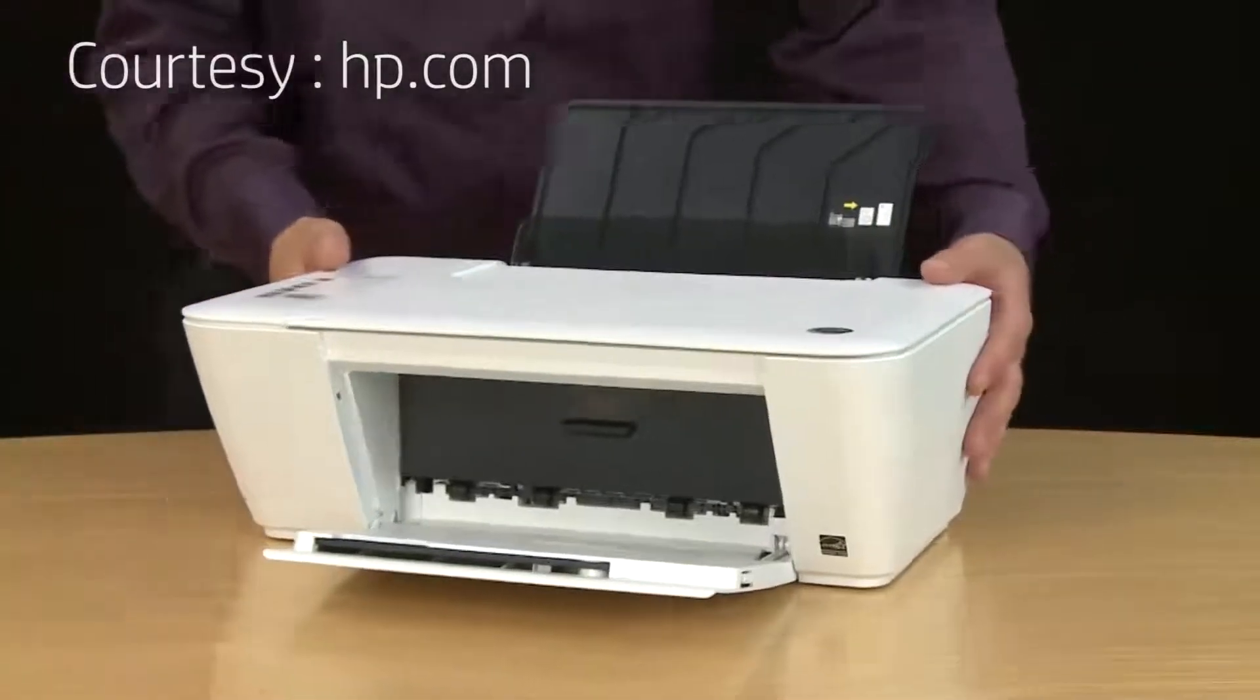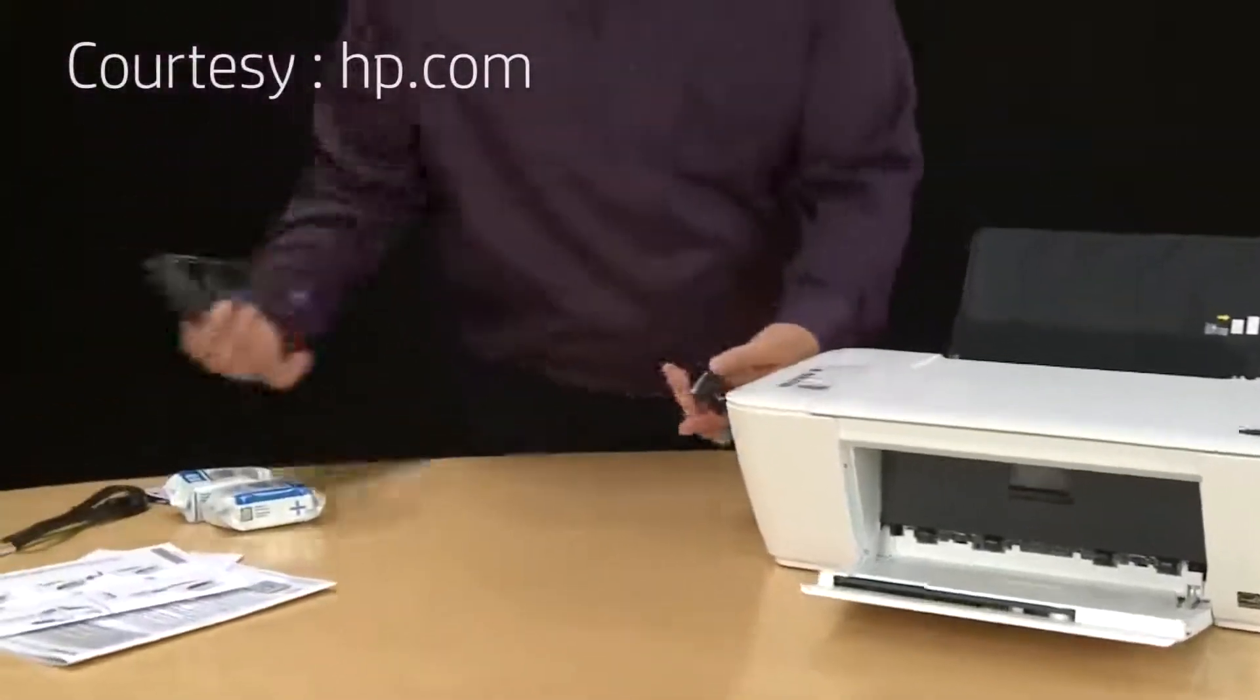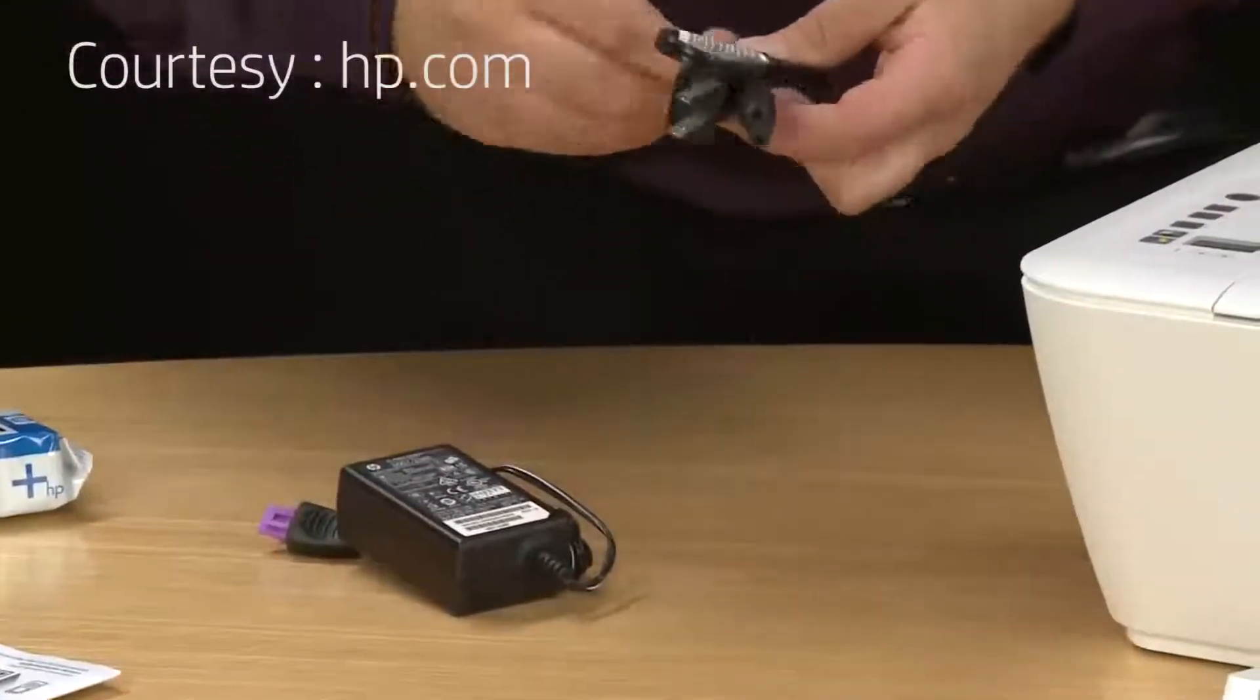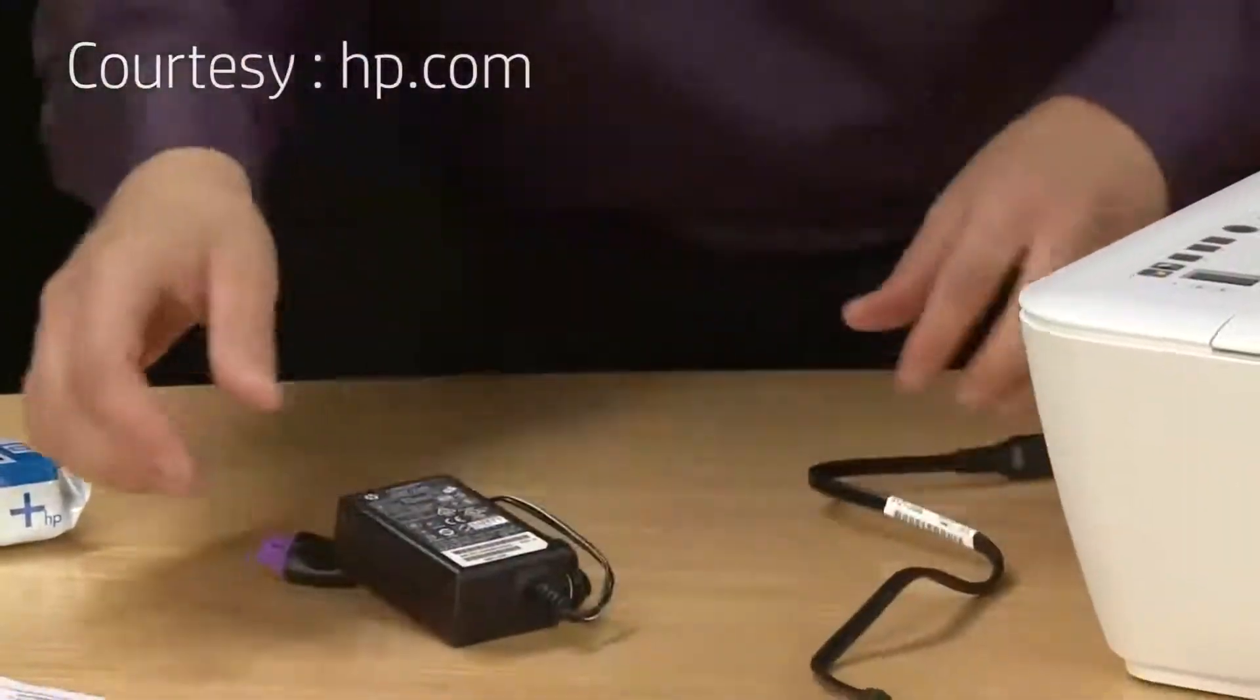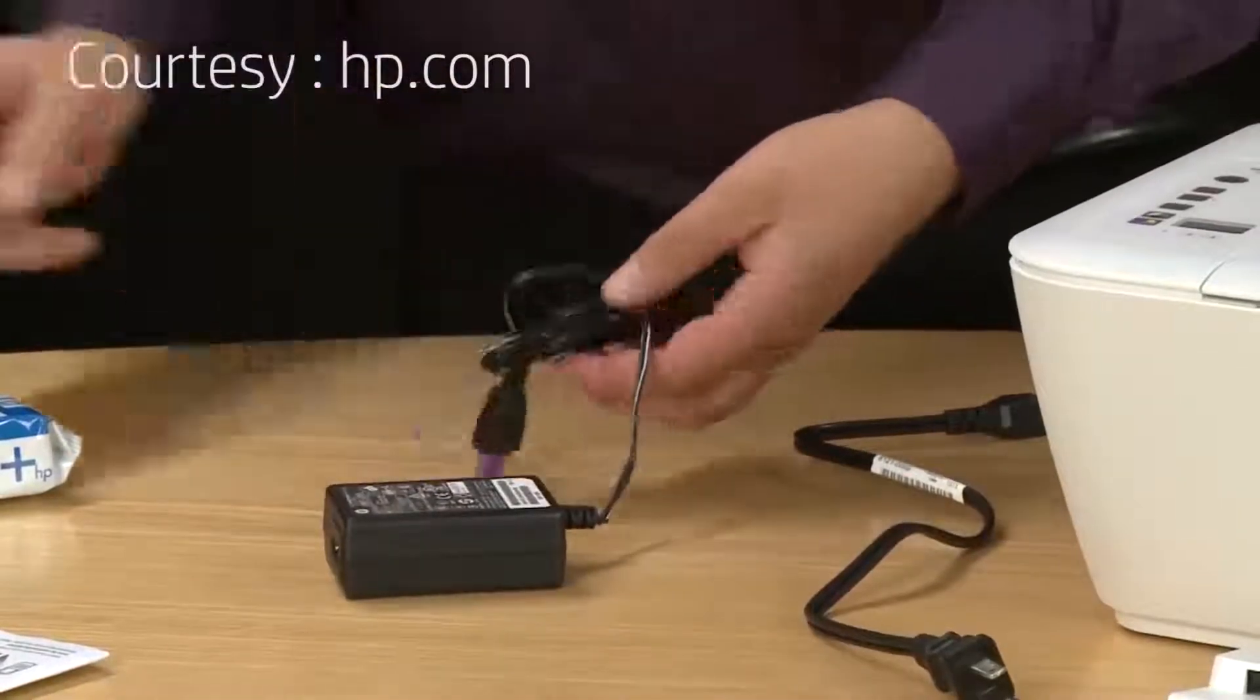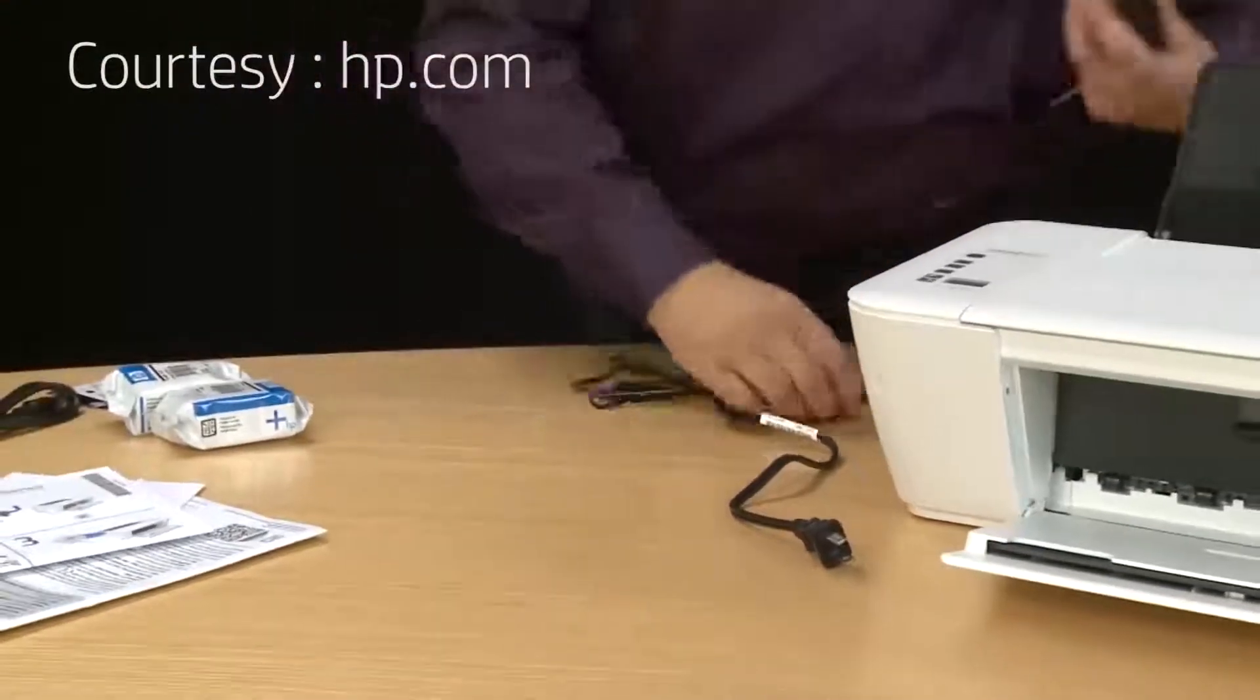The first thing you need to do to set up the hardware is to prepare the power cables. Start by removing the twist tie that's on the power cord. Sometimes they can be a little difficult to get off. Then remove the twist tie on the power cable and adapter. Once they're removed, go ahead and stretch out the cables and we can plug them in.